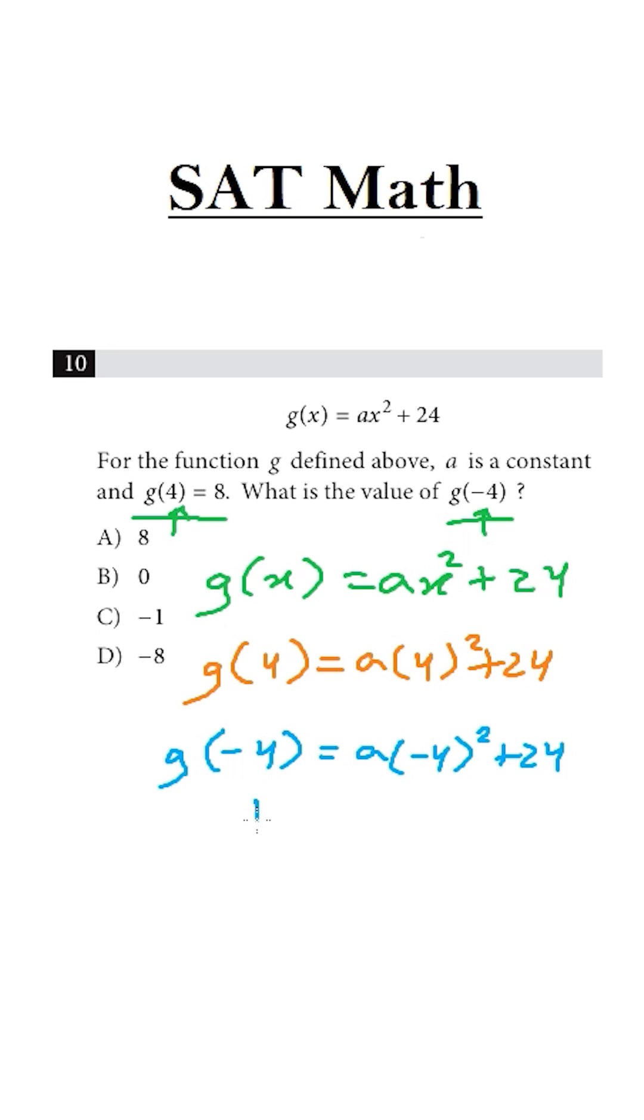And g of apple equals a times apple squared plus 24. Whatever is here, we need to put here. That's it. Now, just be with me.